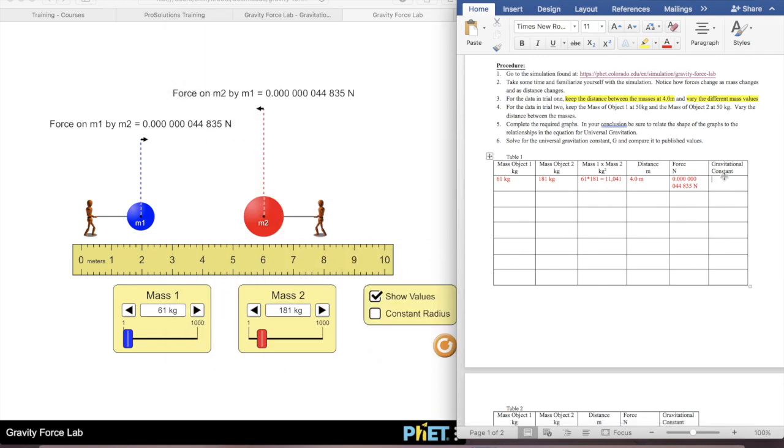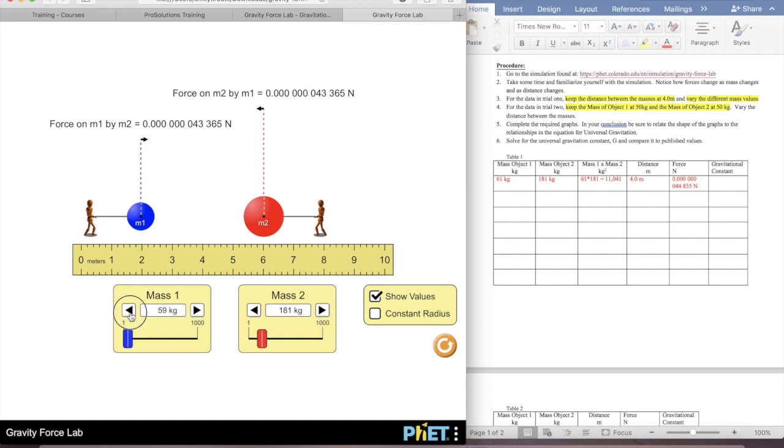And then you can calculate that later. Then it says for trial two, keep the mass of object one at 50 and the mass of object two at 50. So I'm going to do that. And then I can just click down like that, click down like this. It's just going to take longer because it's a larger mass.